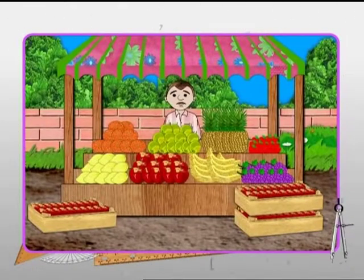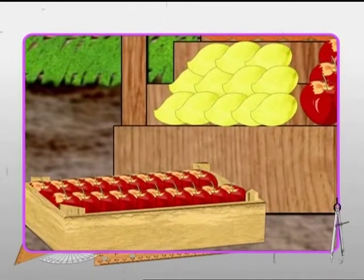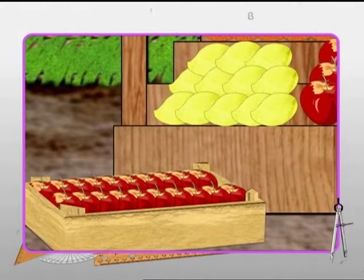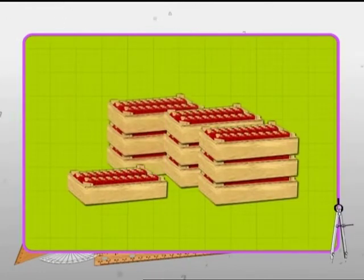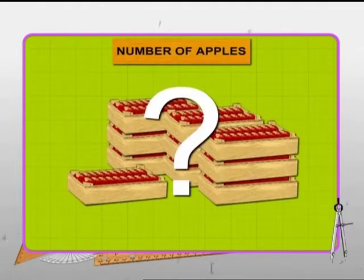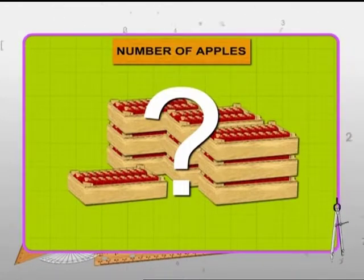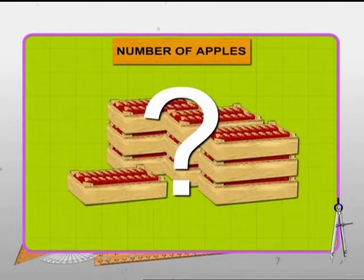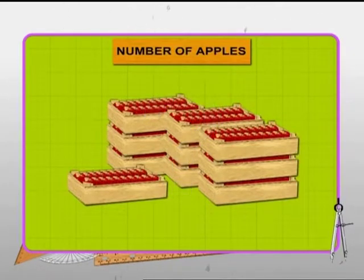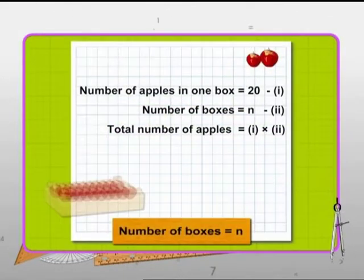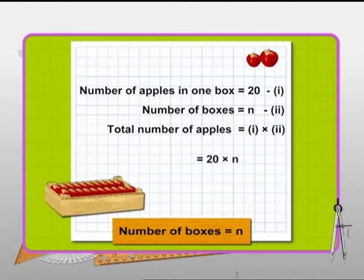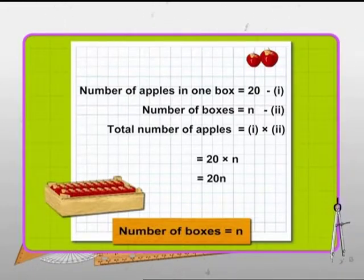Let's look at another problem to understand the use of variables more clearly. Look at this box — it has 20 apples in all. But suppose there are many boxes, then how will we find the total number of apples in them? We can find it by making use of variables. The number of boxes is unknown, so we represent it by a variable. Let's say there are n numbers of boxes. How many apples will be there in them? It will be 20n. That's wonderful — concept of variables understood and applied well.